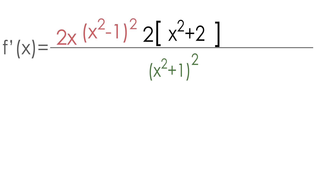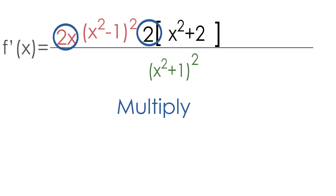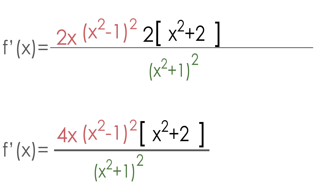This can still be simplified further: the 2 and the 2x can be multiplied together — 2 times 2x equals 4x — and that's our solution. The derivative f′(x) equals 4x · (x² - 1)² · (x² + 2), all over (x² + 1)².